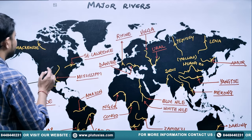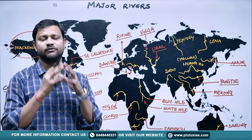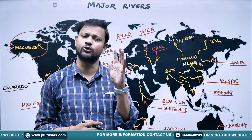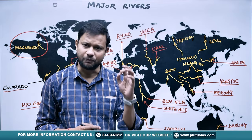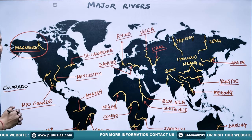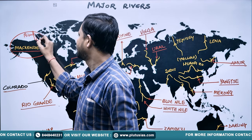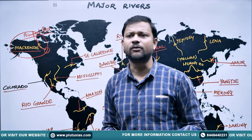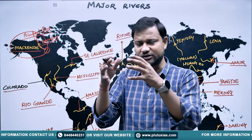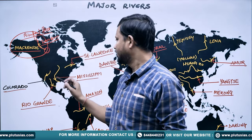Starting with North America, which is a major continental mass with many rivers. We'll try to remember four to five important major names for each continent to avoid confusion. The first river is the Mackenzie — it originates in the Canadian region and drains into the Beaufort Sea, with a length of almost 2,000 kilometers. Note that river lengths can vary by a few kilometers due to disputes about the point of origin.